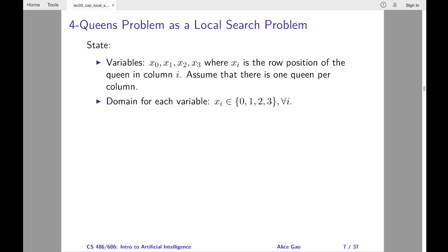I will skip the constraints, and you will see why later. Next, let me define the initial state and the goal state. The initial state has four queens on the board. There's one queen in each column, but each queen can be in a random row position.